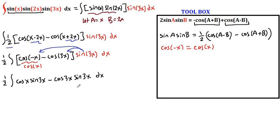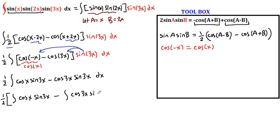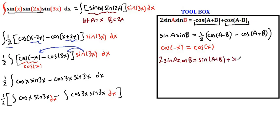Now we can split this into two integrals. We have one half times the integral of cosine x sine 3x minus the integral of cosine 3x sine 3x, all times dx. Here we are going to utilize another angle sum identity: 2 sine a times cosine b is equal to sine of a plus b plus sine of a minus b.